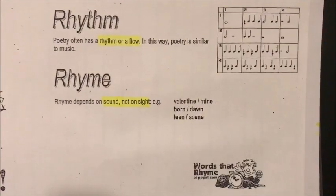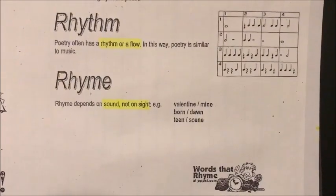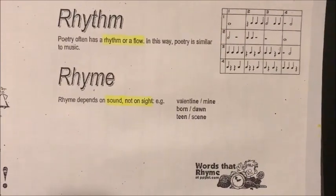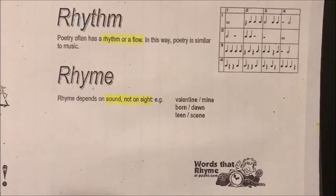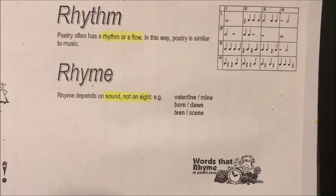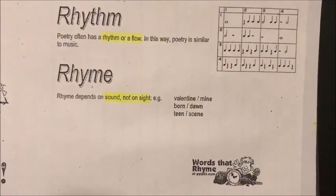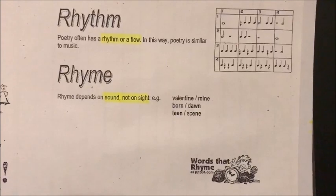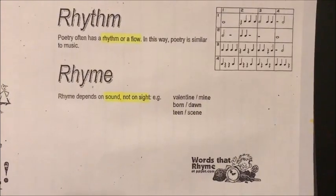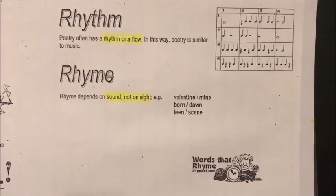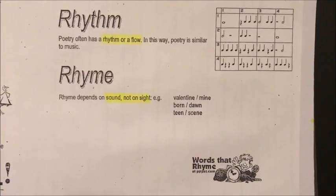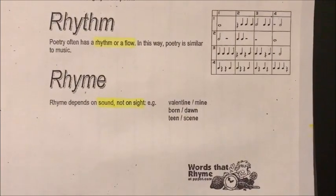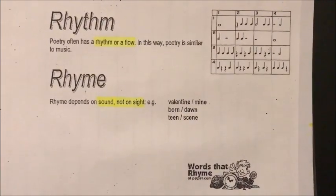Lastly, we come to rhythm and rhyme. Please look at the spelling of the word rhythm — it can be confusing sometimes. Poetry often has a rhythm or flow. In this way, poetry is similar to music. Some of you who are good with music will know that most songs are actually poems, or they started off as poems and then the artist just put rhythm into them and made music. Rhyme depends on sound, not on sight.